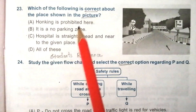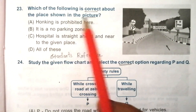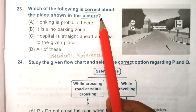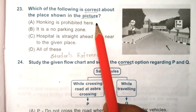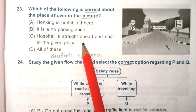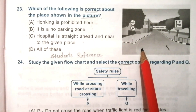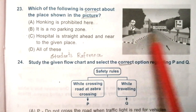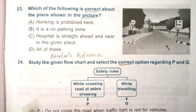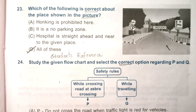Question 23: which of the following is correct about the place shown in the picture? Options are: honking is prohibited here, it is a no parking zone, hospital is straight ahead and near to the given place, all of these. Look at the given picture and the road signs carefully. The answer is D — all of these.